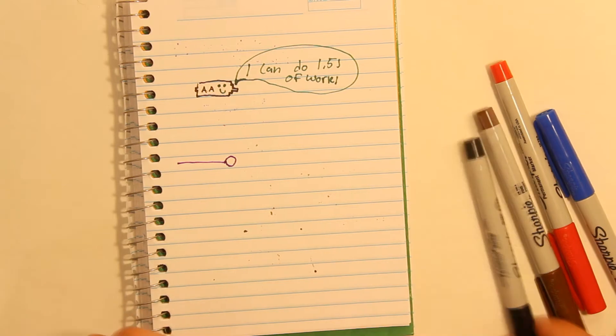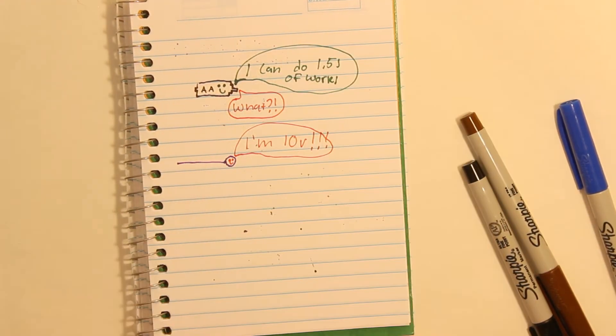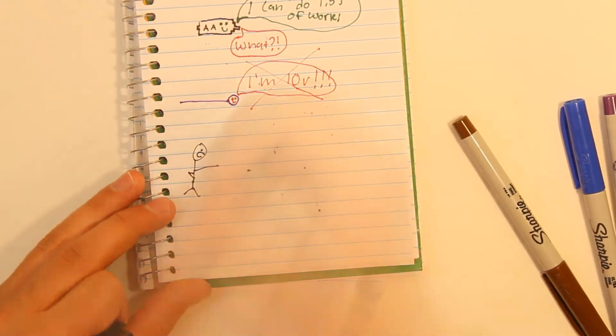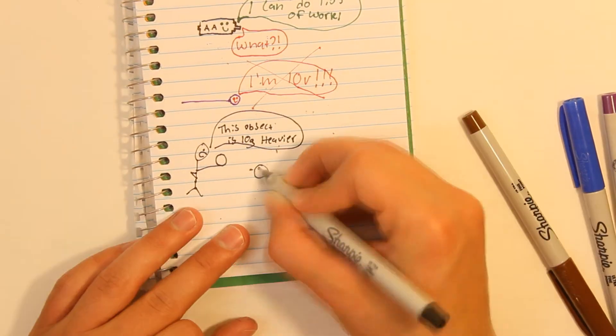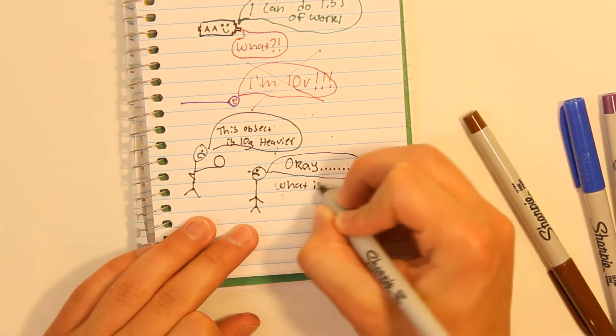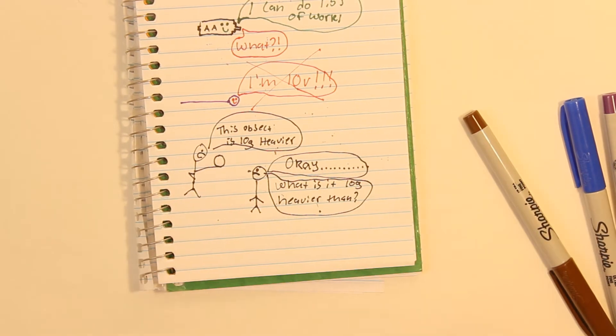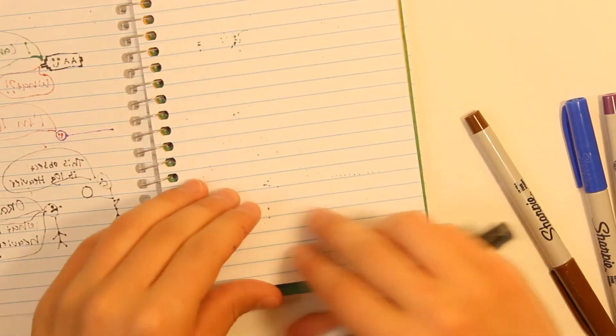But you cannot just say that any one point by itself has 10 volts worth of potential energy. Voltage is relative. To say something by itself has 10 volts would be like picking up an object and saying, this object is 10 grams heavier. Heavier than what? Than a 10 kilogram object? Than a 3 gram object? It doesn't make sense because saying that something is heavier is a relative measurement and not an absolute measurement.